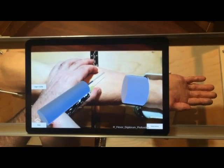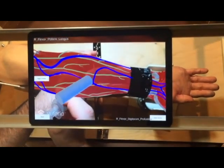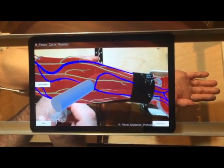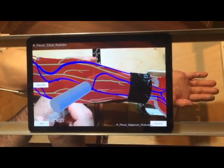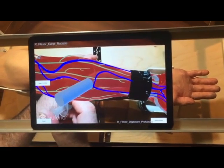Sync the syringe by allowing the tracking marker to be identified within the view of the tablet. Once synchronized, the virtual syringe and needle will superimpose over the view of the physical syringe.